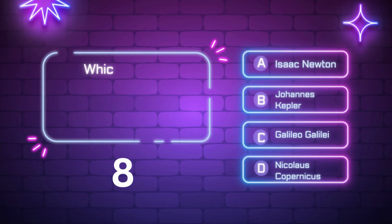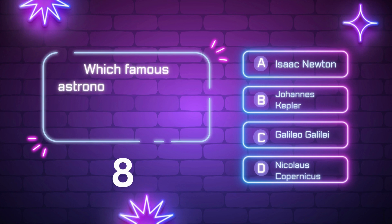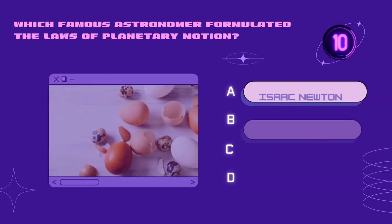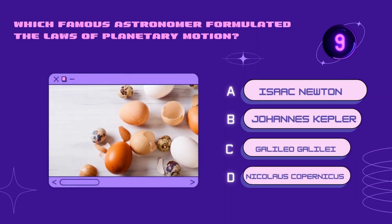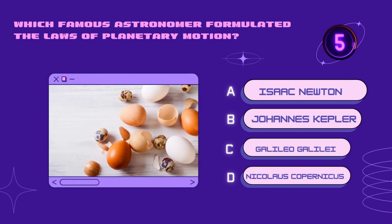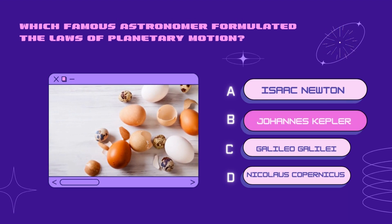Right answer is Kuiper Belt. Which famous astronomer formulated the laws of planetary motion? Isaac Newton, Johannes Kepler, Galileo Galilei, Nicholas Copernicus. Your time starts now. Right answer is Johannes Kepler.